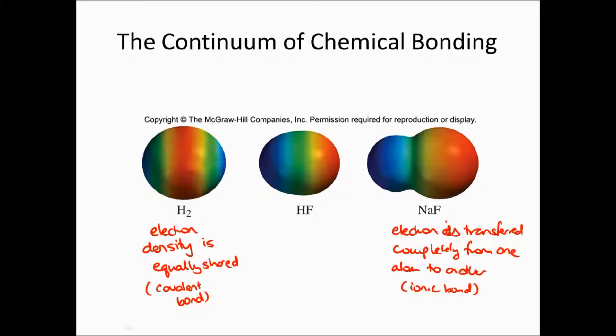So here we have equal sharing, and here we have a complete transfer of the electron density. What happens in HF? Well, fluorine can hold on to the electron density a lot better than the hydrogen, so there's an uneven sharing of electron density.